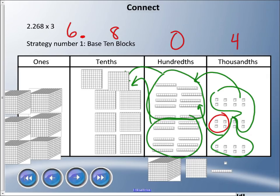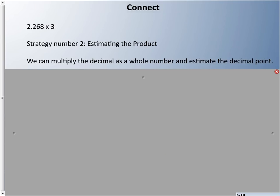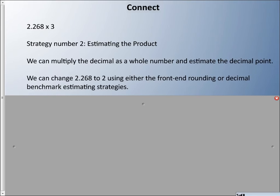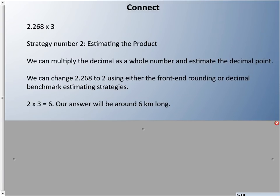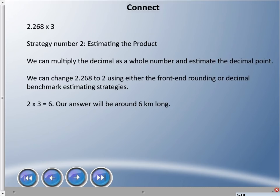Here's another method. We're going to estimate the product. We did this before, that's what we focused on last lesson. We're going to use it to figure it out this time. We're going to multiply the decimal as if it was a whole number and we're going to estimate the decimal point. Let's estimate first. I have 2.268, I'm going to multiply that by 3. We can either change that to a 2 using front end rounding or decimal benchmarks. So 2 times 3 is 6, so our answer has got to be around 6 kilometers long.